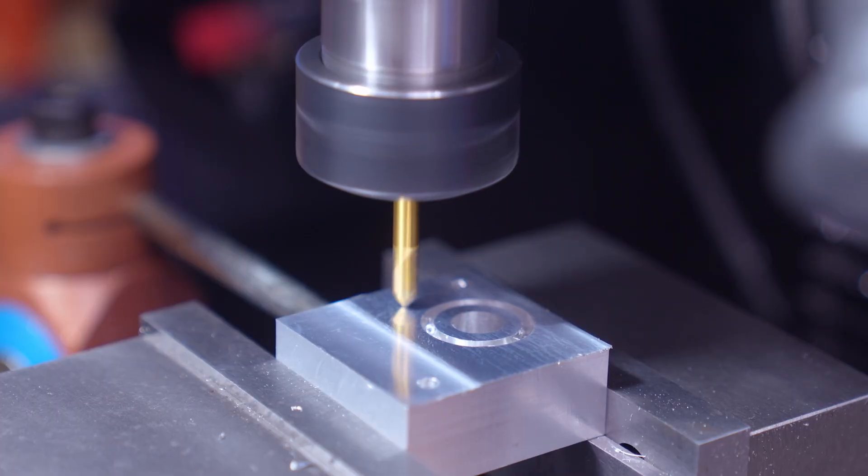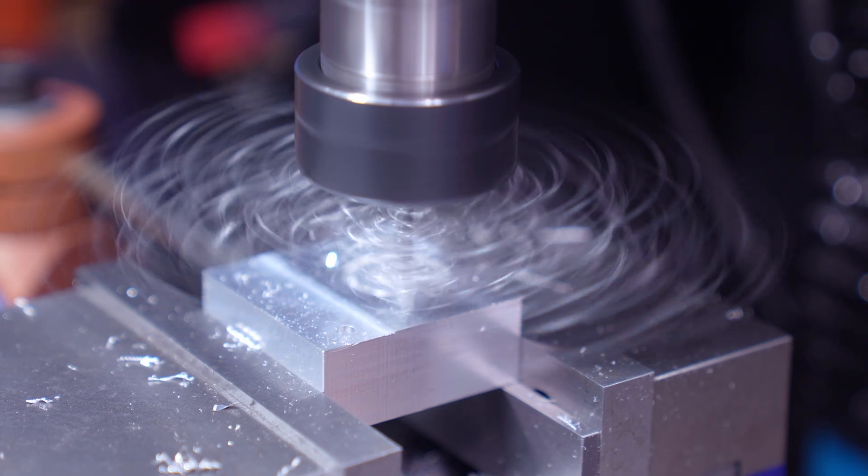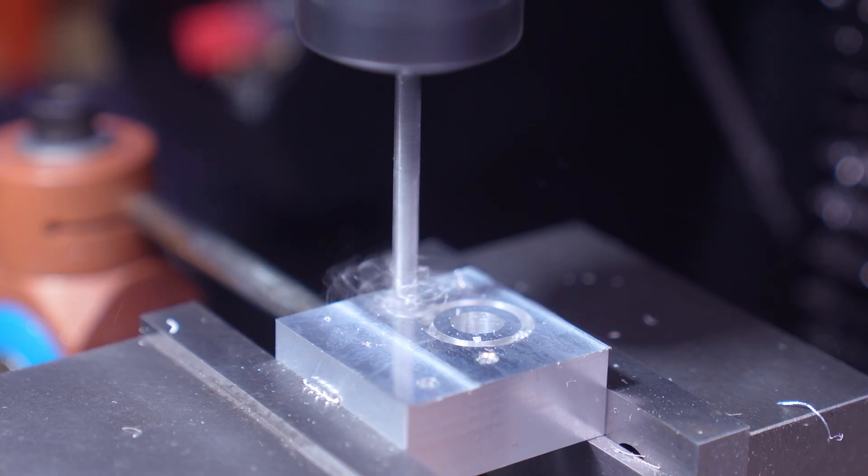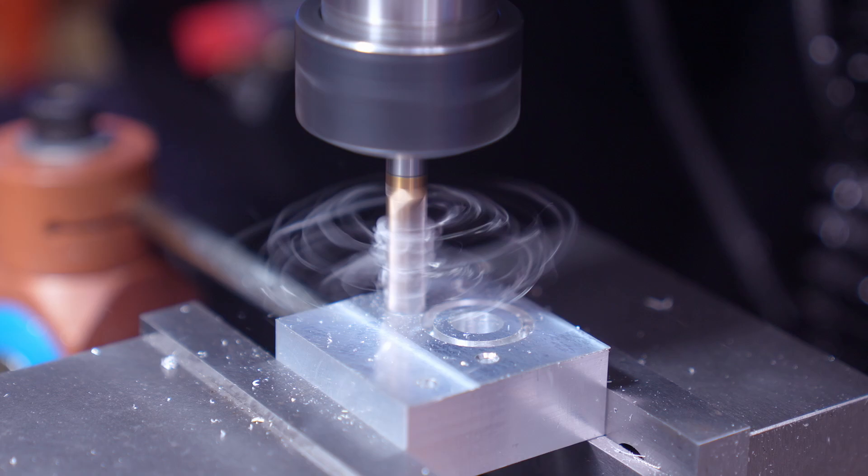Then, I machined the inlet and outlet ports. I also needed to use an end mill to mill a step surface in the outlet port for the O-ring.